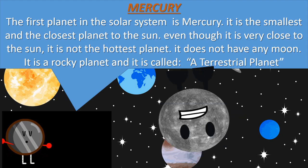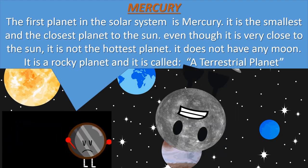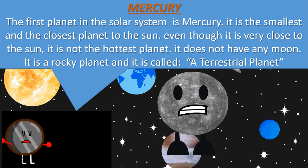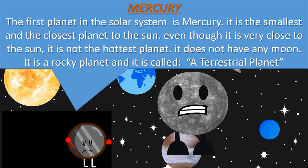Mercury. The first planet in the solar system is Mercury. It is the smallest and closest planet to the sun. Even though it is very close to the sun, it is not the hottest planet. It does not have any moon. It is a rocky planet and it is called a terrestrial planet.